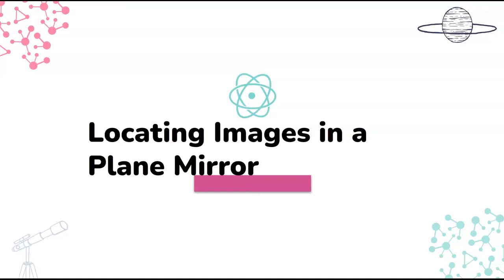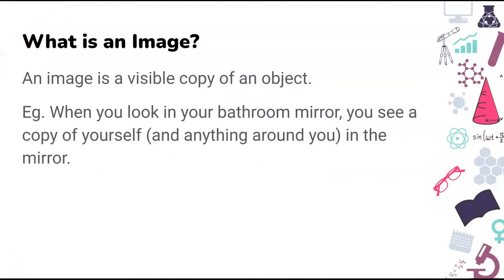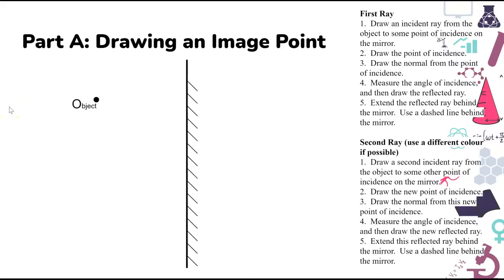It's time to figure out how to actually locate images in a plane mirror. I've shown you a video of how it's generally done, but we're going to walk through the steps and actually take you through exactly how to do it with a very simple object, and then we'll look at slightly more complicated objects as we go along. What is an image? An image is simply a visible copy of any object.